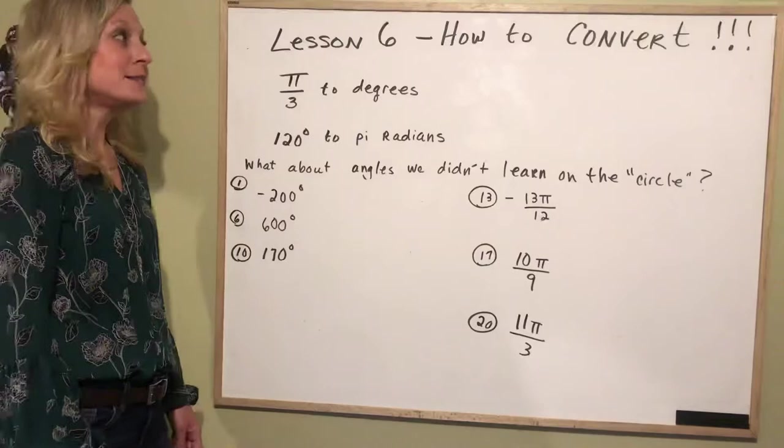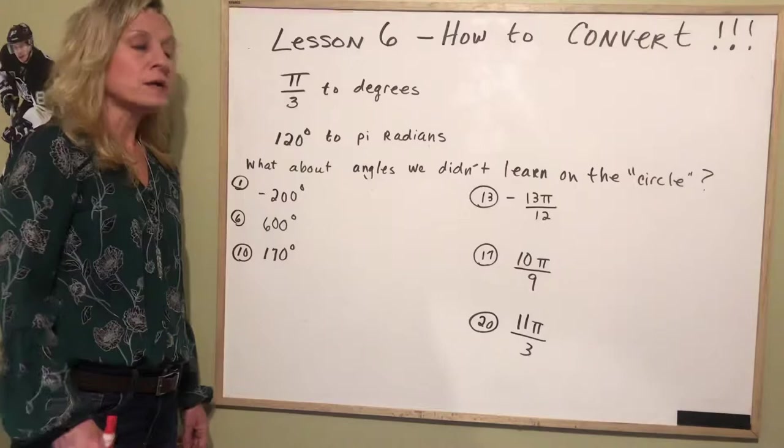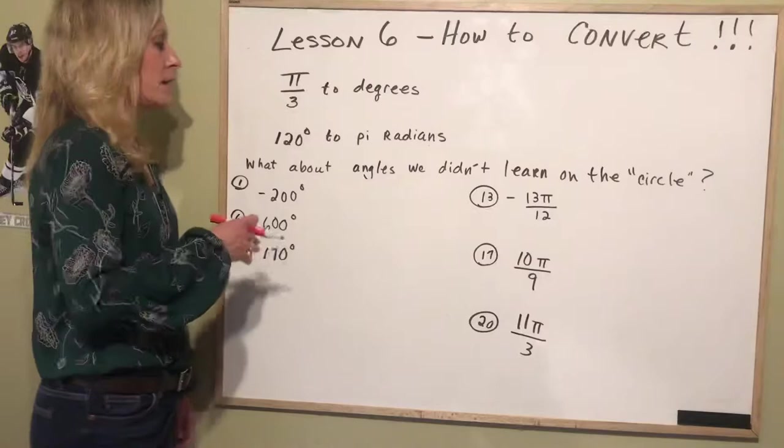We're at lesson 6 on trigonometry and the unit circle and today we are going to learn how to convert. So we are going to go from terms of pi to degrees and from degrees to terms of pi or what we will call pi radians.